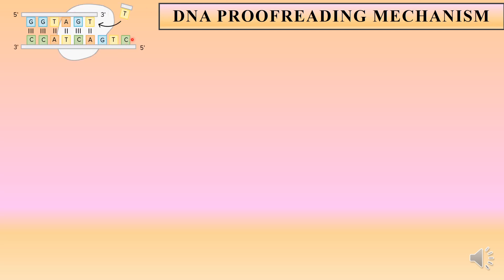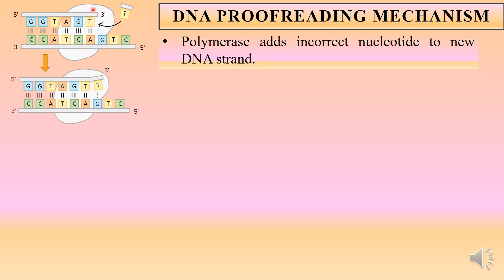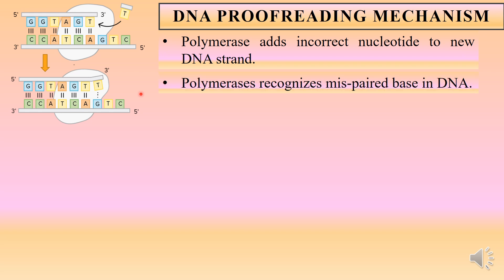Let us look at the DNA proofreading mechanism. This is the replicating DNA. The strand in the 5' to 3' direction is the newly synthesized strand, and the strand in the 3' to 5' direction is the parental strand. The enzyme here is the DNA polymerase, and you can see that a wrong nucleotide is entering. The polymerase adds an incorrect nucleotide to the new DNA strand. The moment DNA polymerase recognizes the incorrect nucleotide, it stops further elongation and stops the addition of any new nucleotide, recognizing the mispaired base.